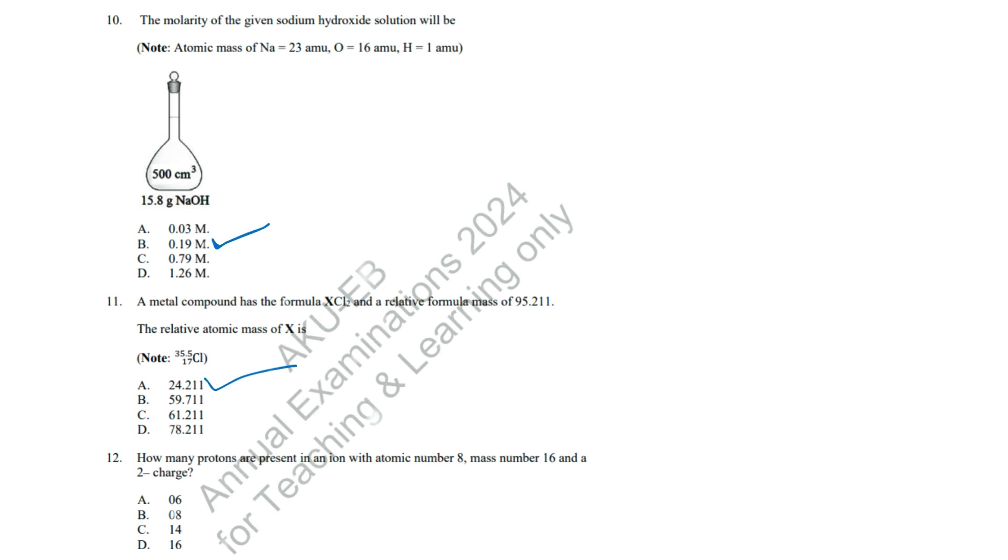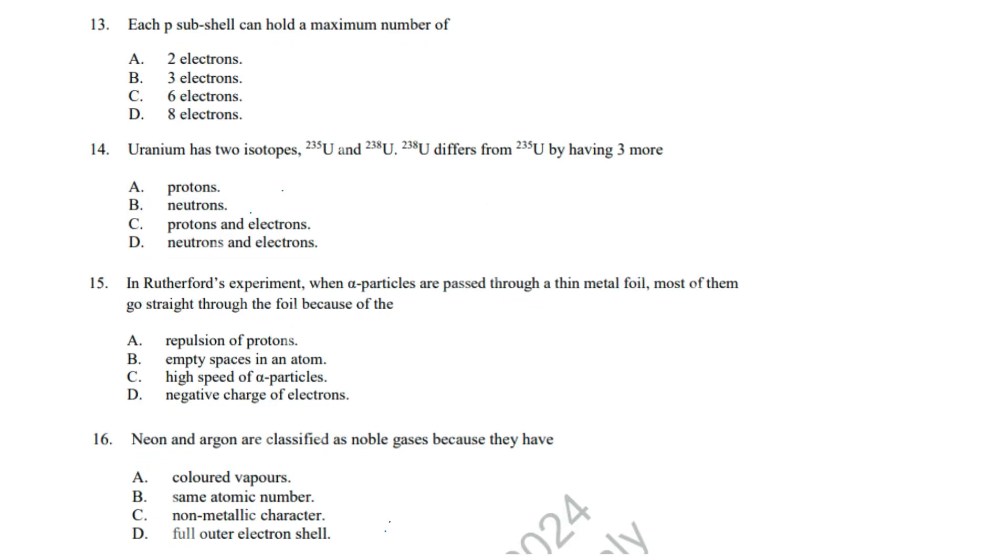Question 12: Protons are equal to the atomic number, so oxygen has 8 protons regardless of charge. Correct answer: B, 8. Question 13: A P subshell contains 3 orbitals, each holding 2 electrons. 3 times 2 equals 6. Correct answer: C, 6 electrons.